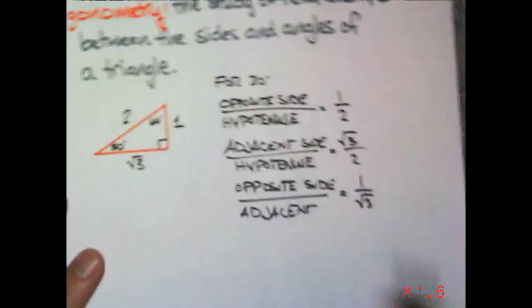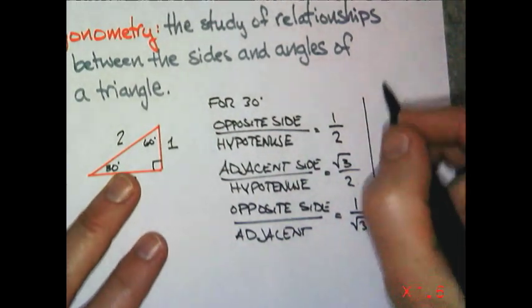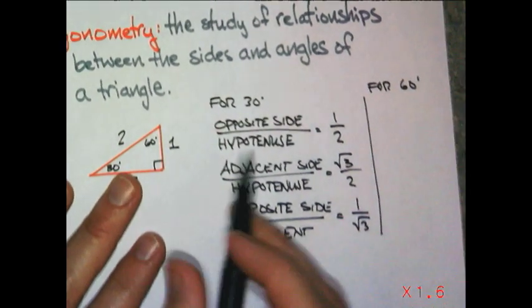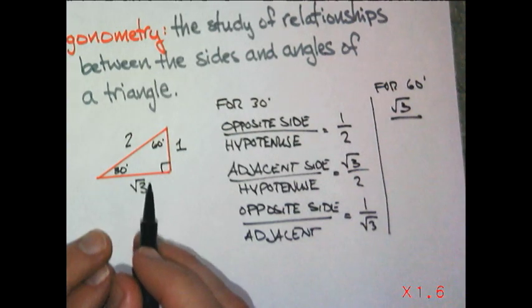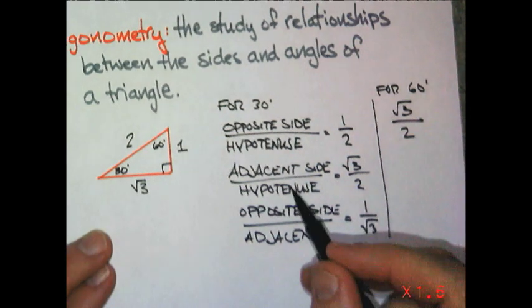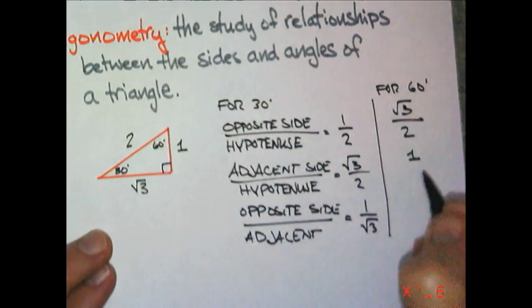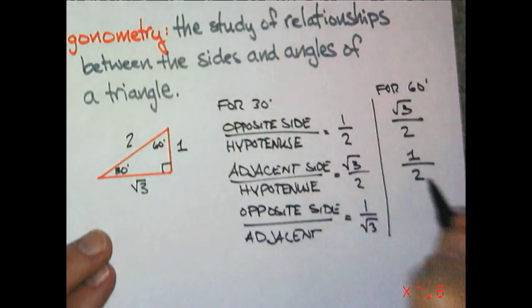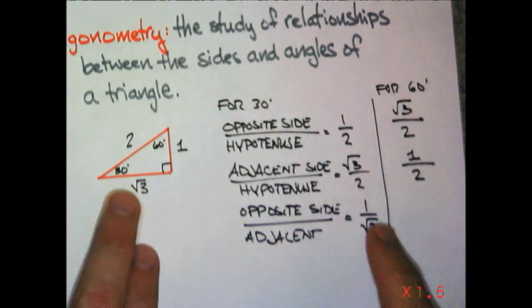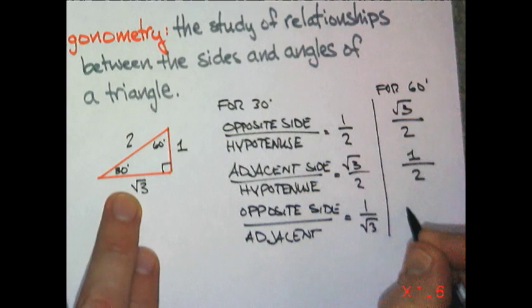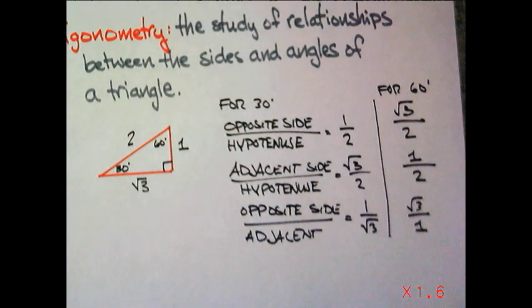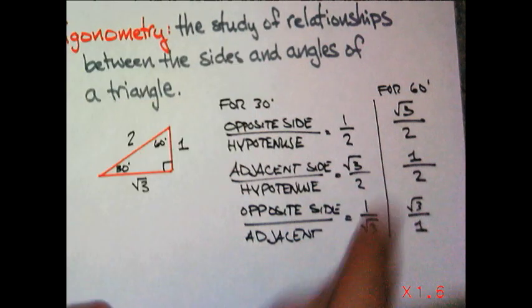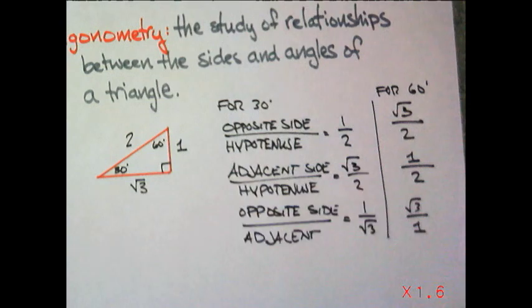Let's do the same thing. We'll do all the same comparisons for 60 degrees. If you're standing at 60 degrees, the opposite side now becomes root 3. The hypotenuse still would be 2. The adjacent side for 60 degrees becomes 1. And the hypotenuse is still 2. The opposite side for 60 degrees is root 3, and the adjacent side is just 1. You can see that there is a relationship between 30 degrees and 60 degrees because those two are talking about the same triangle.